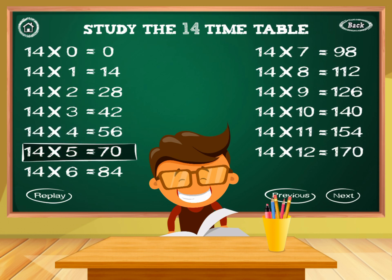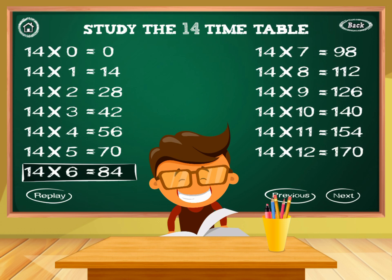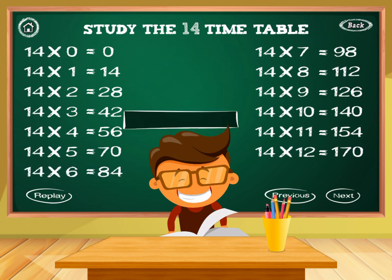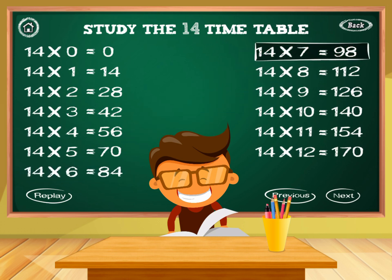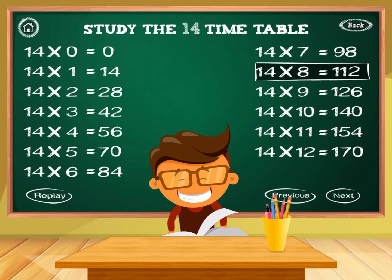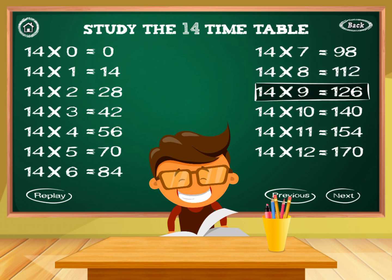14 times 5 equals 70. 14 times 6 equals 84. 14 times 7 equals 98. 14 times 8 equals 112. 14 times 9 equals 126.